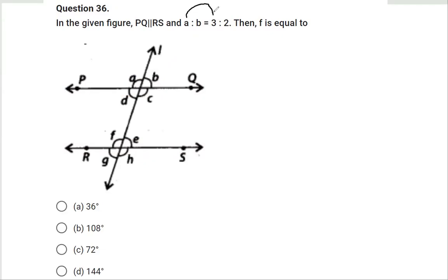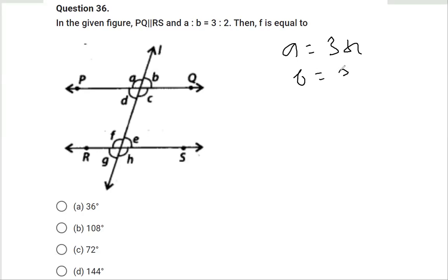Since A is three parts and B is two parts, we can express angle A as 3X and angle B as 2X for some variable X.